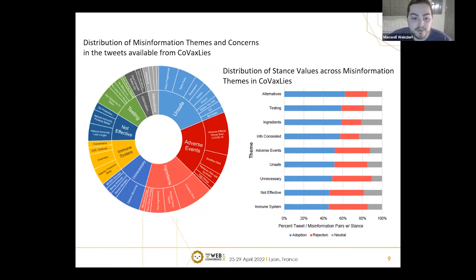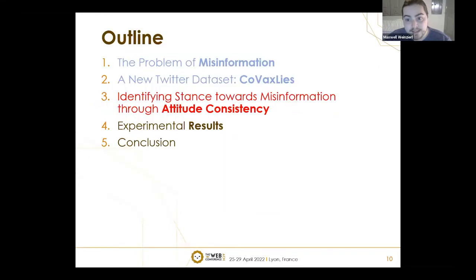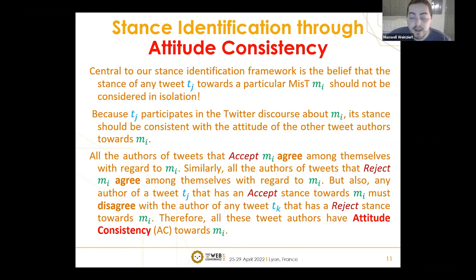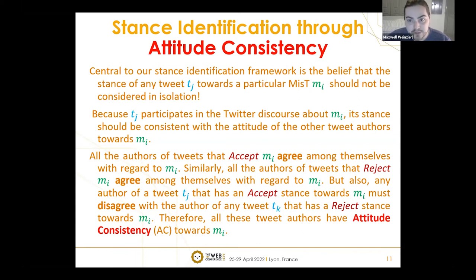We want to identify stance automatically through a learned system. The approach we took is what we call attitude consistency. The idea is that a tweet shouldn't be considered in isolation — for a misinformation target like 'vaccines render pregnancies risky,' we want to look at all tweets that have some stance towards that target. From a semantic perspective, all tweets with an accept stance and all tweets with a reject stance, because those tweets implicitly either agree or disagree with each other.